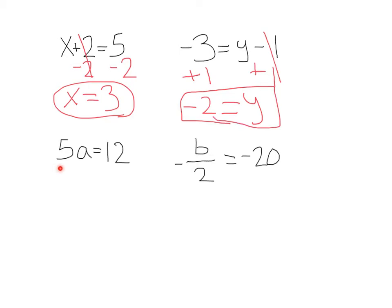Let's move on down here. Here we have 5a equals 12. Notice this 5 is right next to the a, so that's multiplication. To get my a by itself, to isolate my variable,